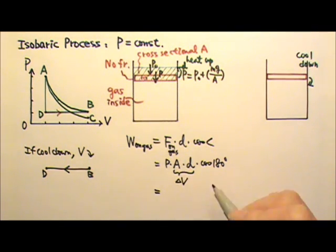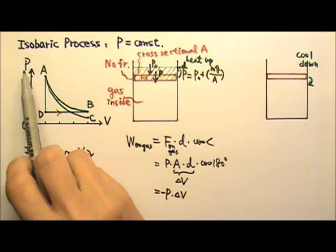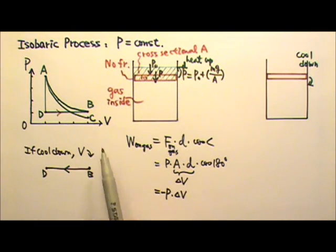So this gives me P times ΔV times cos 180, that's negative 1. On a P versus V diagram, what do you think P times ΔV represents?